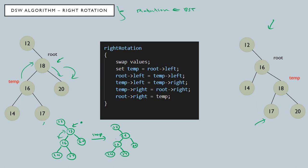Then 18 will be attached to the right side of 16. First, we store the corresponding left pointer in a temporary variable — we store the 16 left pointer. Then we attach 18 to this side, attach 20 to this side, and attach 14 to this side.